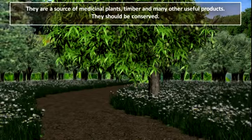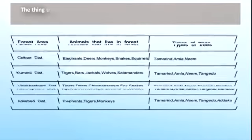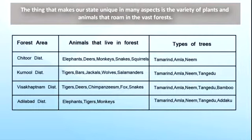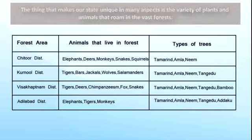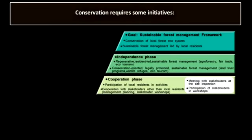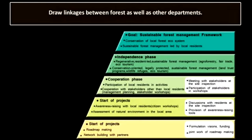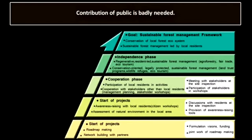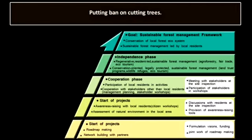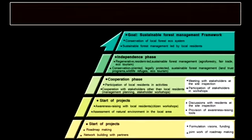We must preserve our forests. Our state possesses a distinct identity, not only because of its geography, history, and culture, but also because of the great diversity of animals and the plant kingdom. For conservation of forests, the following steps can be taken: perfect coordination between forests and other departments; people's participation is of vital importance; the cutting of trees must be stopped at all costs; special programs like Van Mahotsava should be launched on a grand scale; and cutting of timber and other forest produce should be restricted.